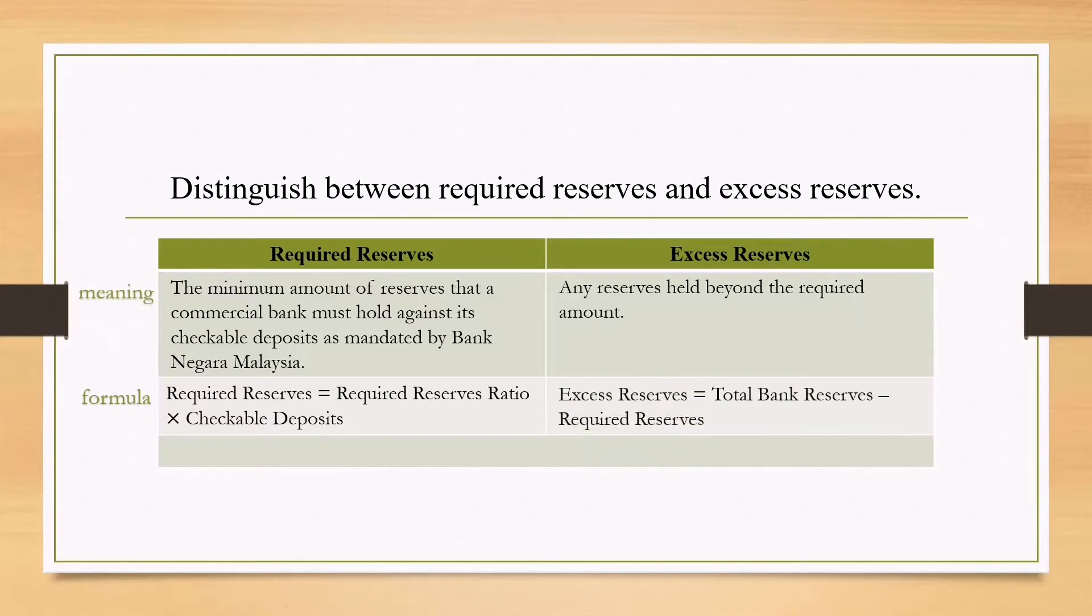On the other hand, the excess reserve equals total bank reserve minus required reserve. From there, we know that total bank reserve equals the sum of required reserve and excess reserve.